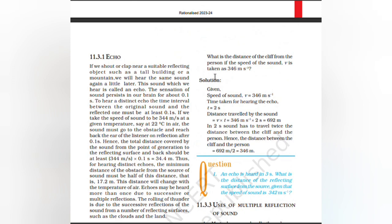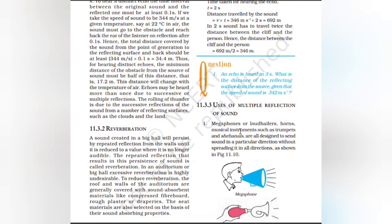Numerical example: What is the distance of a cliff from a person if an echo is heard after 2 seconds? Speed of sound = 346 m/s. Distance traveled = v × t = 346 × 2 = 692 m. Since the sound had to travel twice the distance between the cliff and the person, the distance = 692/2 = 346 m.